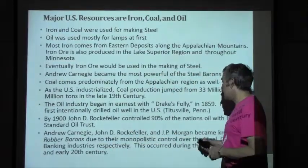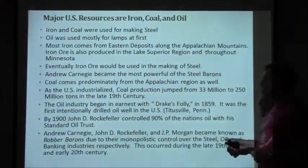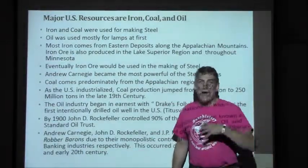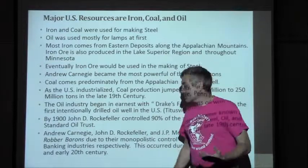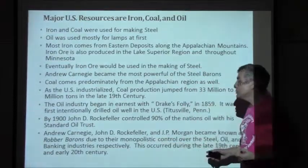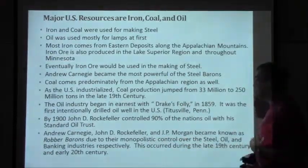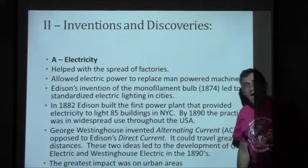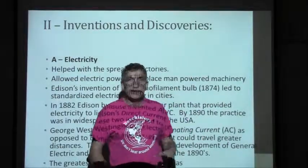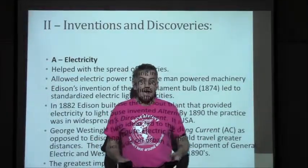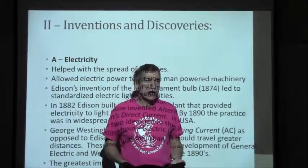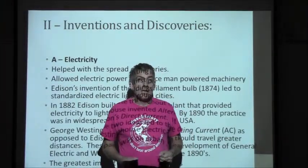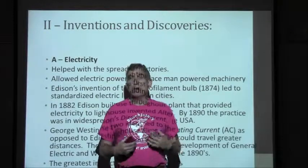Andrew Carnegie, John D. Rockefeller, and J.P. Morgan became known as robber barons — that's what the poor people called them. Captain of industry is what their friends called them. This is due to their monopolistic control over steel, oil, and banking industries. At the same time, you have an entrepreneurship of discovery going on — people making new inventions. It's almost like a renaissance in American ingenuity and entrepreneurship.